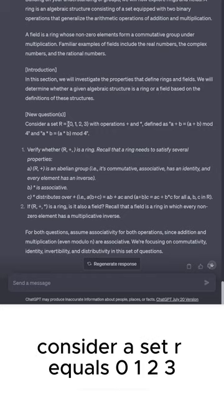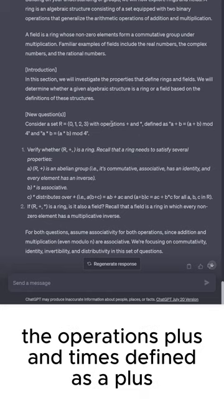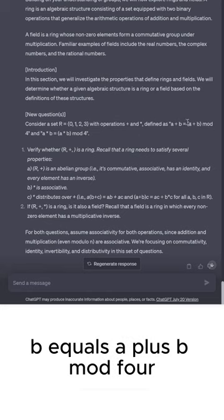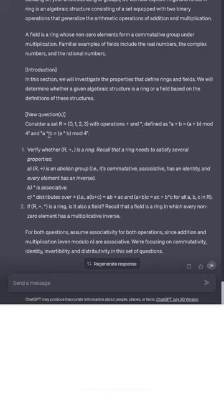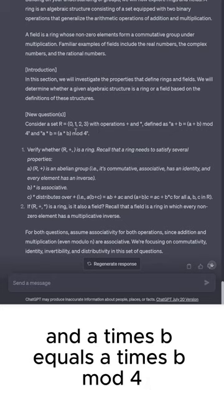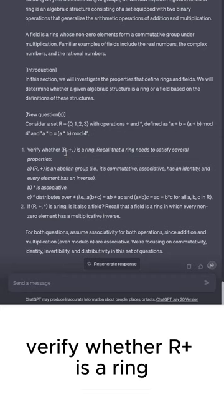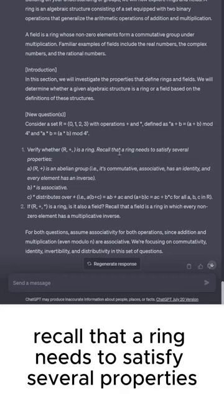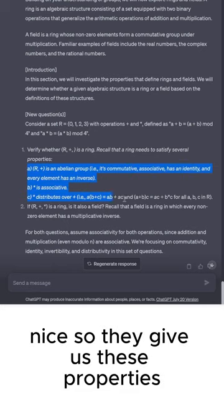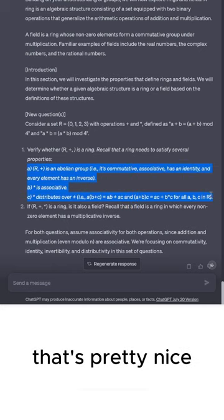Consider a set R equals 0, 1, 2, 3 with operations plus and times defined as A plus B equals A plus B mod 4, and A times B equals A times B mod 4. Verify whether R plus is a ring. Recall that a ring needs to satisfy several properties. Nice, so they give us these properties.